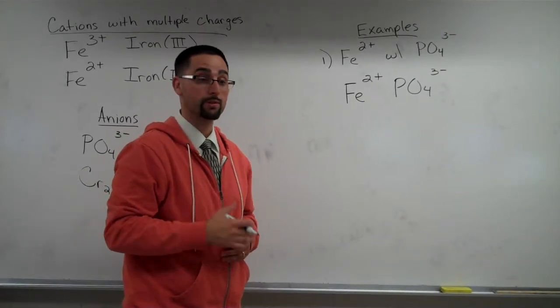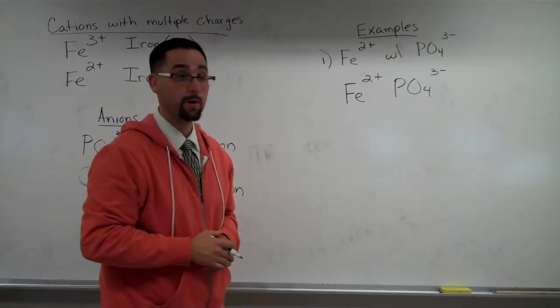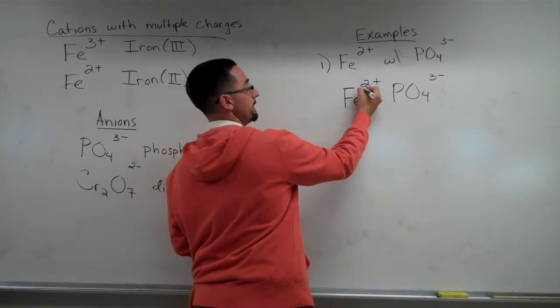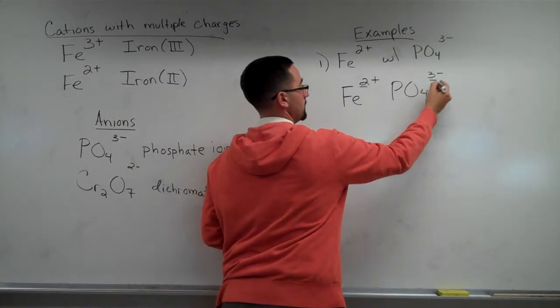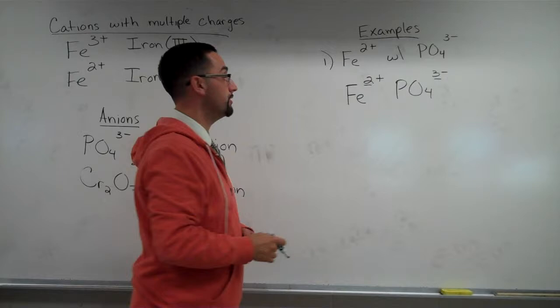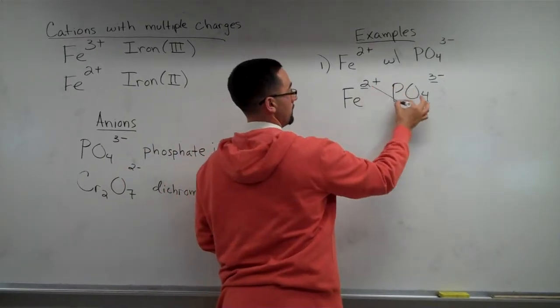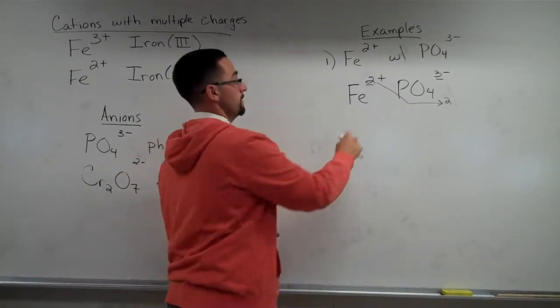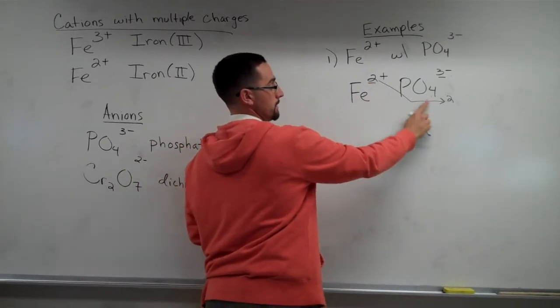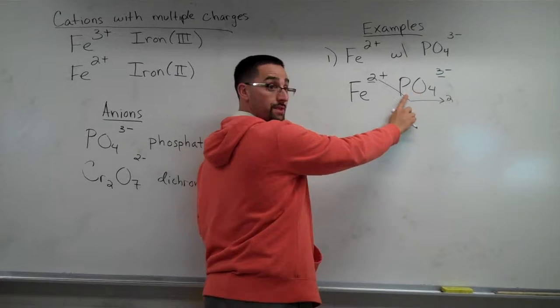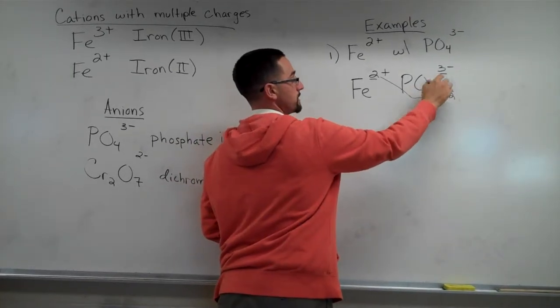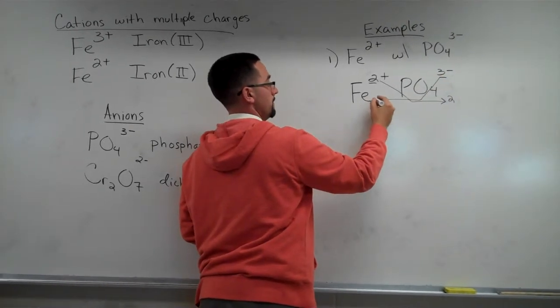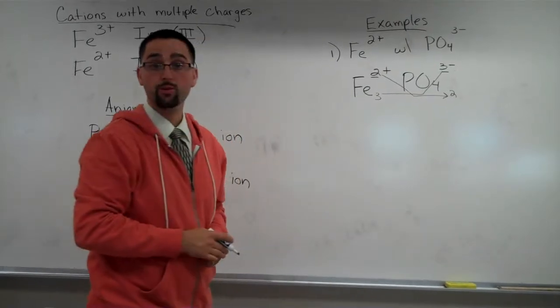So there's a simple method that I use when teaching this. It's called the crisscross method. And what you do is you take the absolute value of the ion's charge and you simply cross it over as a subscript of the other ion. So iron 2 charge is a 2 subscript for phosphate, and phosphate 3 becomes the subscript for iron.